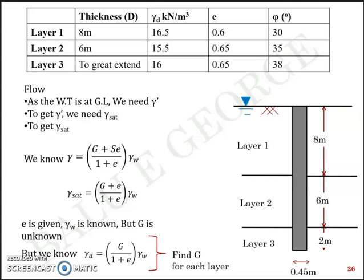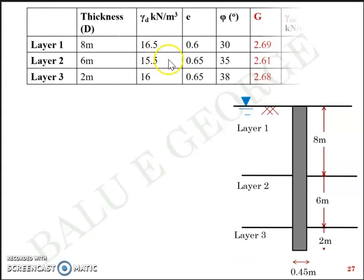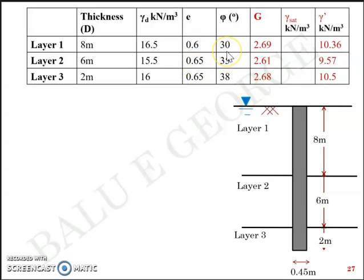So find G for each layer is our first task. I have represented this in a tabular form. Thickness is given, gamma d is given, e is given, phi is given. Based on the equation, gamma d is (G + S·e)/(1 + e) times gamma w where S is 0. So you can arrive at the G value for each layer, and based on which you can arrive at the gamma saturated value, and based on which you can arrive at the gamma submerged values.